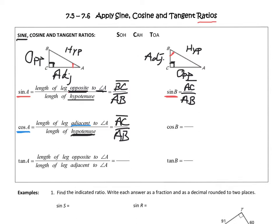Now when I jump over to the cosine of angle B, the first part of my ratio is still going to be the adjacent side, but now adjacent to angle B, which is side BC. And the denominator, or the second part of my ratio, is still going to be the hypotenuse, which is side AB.